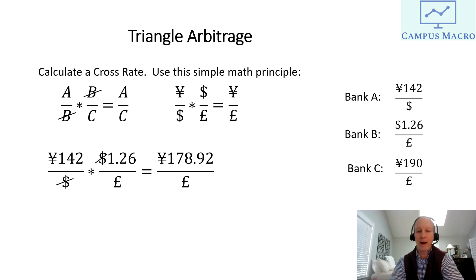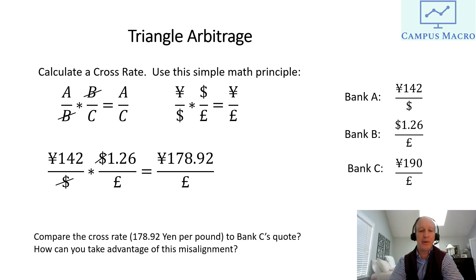Comparing this to Bank C's quote of 190 yen per pound, that is very different from the cross rate of 178.92 yen per pound. Bank C is quoting yen very cheaply. If I come in with one pound, I get 190 yen — much more than the cross rate implies. So I want to get hold of some pounds and go to Bank C to execute that transaction, because it's very attractive.